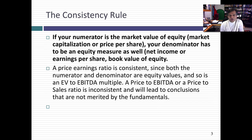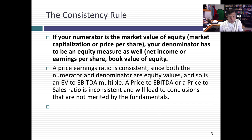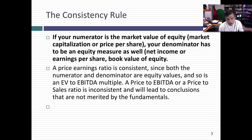There's one simple rule you should follow whenever you use a multiple: the consistency rule. If your numerator is an equity value, your denominator has to be an equity value as well. If your numerator is a firm or enterprise value, the denominator must be a firm or enterprise value too. The PE ratio — the most widely used multiple in the world — is consistent: price per share divided by earnings per share. Enterprise value to EBITDA is similarly consistent. Inconsistent examples include dividing price by EBITDA or price by sales; for revenue multiples, you should use enterprise value to sales.